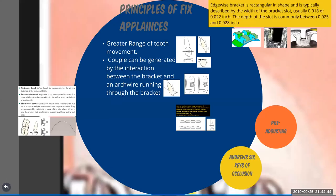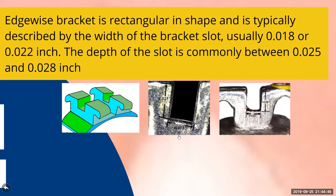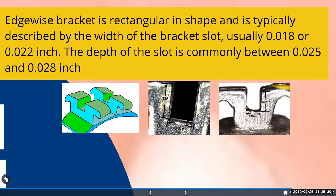The bracket is a star-shaped structure attached to the tooth. The 0.028 inch refers to the depth of the slot. Different slot dimensions include 0.018 inch or 0.022 inch in height, and 0.025 or 0.028 inch in depth. The majority of fixed appliances are either 018 or 022 in height. This is the classical version of an edgewise appliance; there are different kinds of fixed appliances.